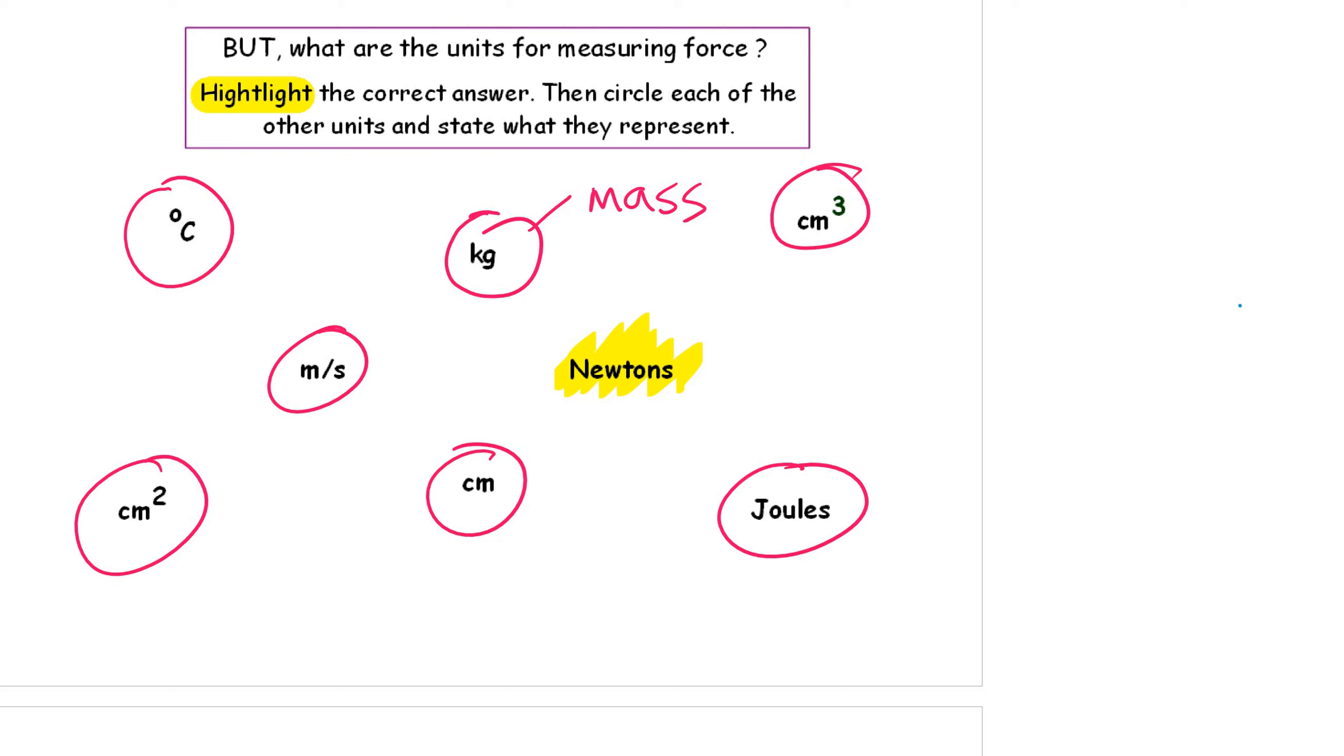I wondered, did you get the right answers? Of course, Newtons are used for measuring force. Joules, that is the units for energy. Write that down. Centimetres cubed. Volume. Centimetres will be length or distance. Centimetres squared will be measuring an area of something like a piece of paper. Degrees C is a measurement for temperature and metres per second. Speed.